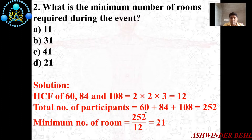The total number of participants is 60 + 84 + 108, which equals 252. So the minimum number of rooms is 252 ÷ 12, which gives us 21. The correct option is 21.